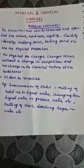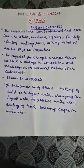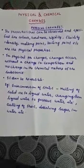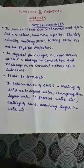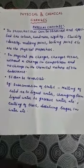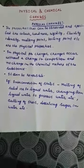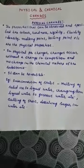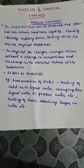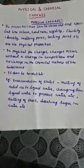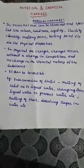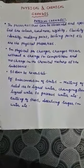In physical changes, there will be no change in the chemical nature of the substance. For example, if you take liquid water and keep it in the fridge, it becomes ice — but the chemical substance present in ice is also H2O. Similarly, changing from liquid water to gaseous water, the chemical substance is still H2O. H2O is not getting changed to some other substance. These types of changes are called physical changes.